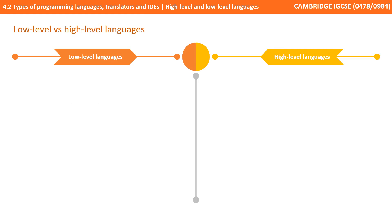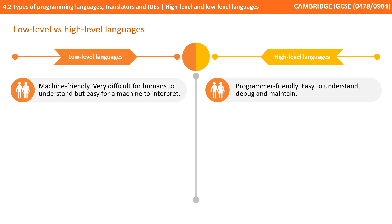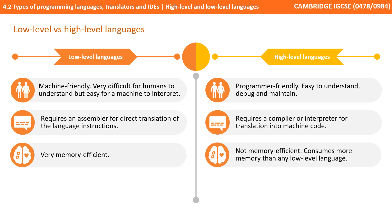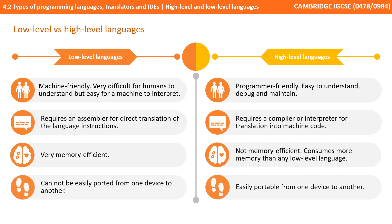Let's compare low-level and high-level languages. Low-level can be thought of as machine-friendly — they're very difficult for humans to understand but easy for machines to interpret. Whereas high-level languages are what's known as programmer-friendly: easy to understand, debug, and maintain.